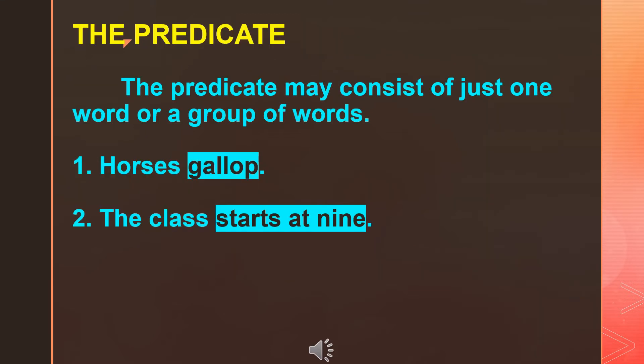The predicate may consist of just one word or a group of words. When the predicate has only one word, it will always be a verb. We know that every predicate must have a finite verb. We have already said that the subject will be a noun or a pronoun. The predicate will contain a verb, in addition to a possible modifier.